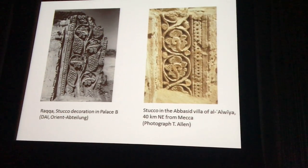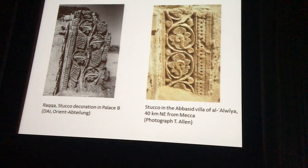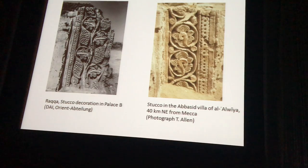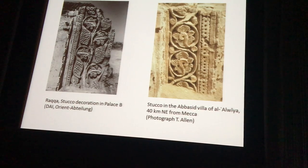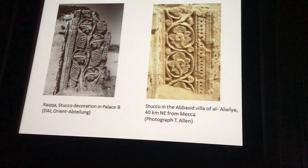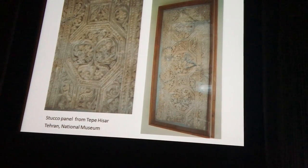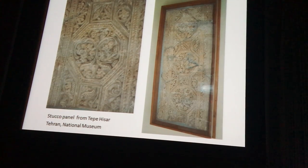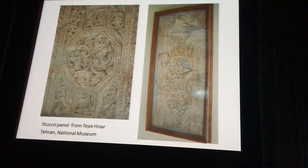Very similar in motifs and in the forms in which the motifs are rendered, we find this in other early Abbasid period buildings, for example on the Hajj route through Saudi Arabia from Iraq to Mecca. But we also find them at earlier periods, in monuments of which it is difficult to tell whether they were still Sasanian or already early Islamic.